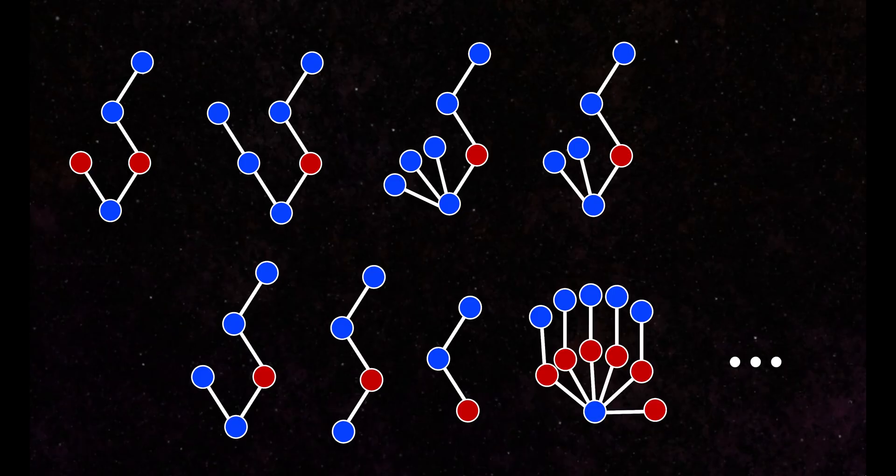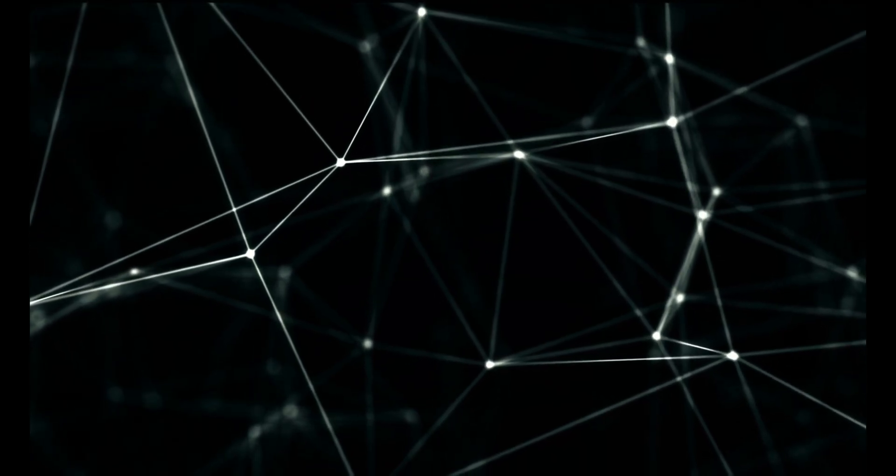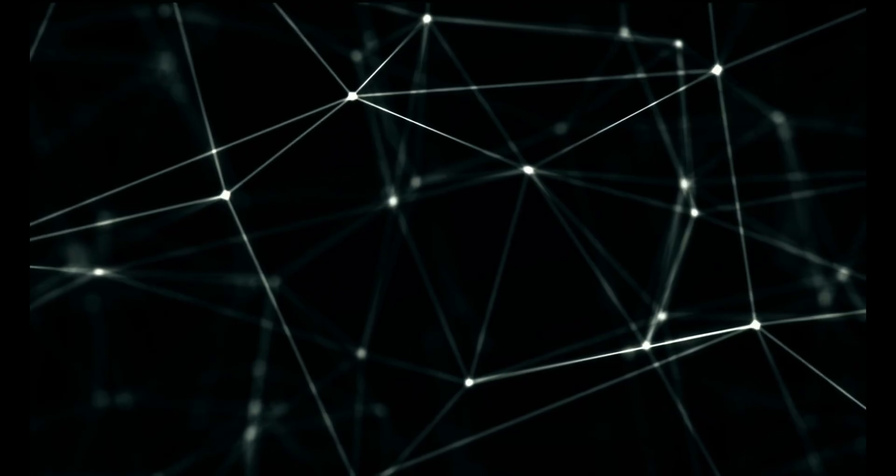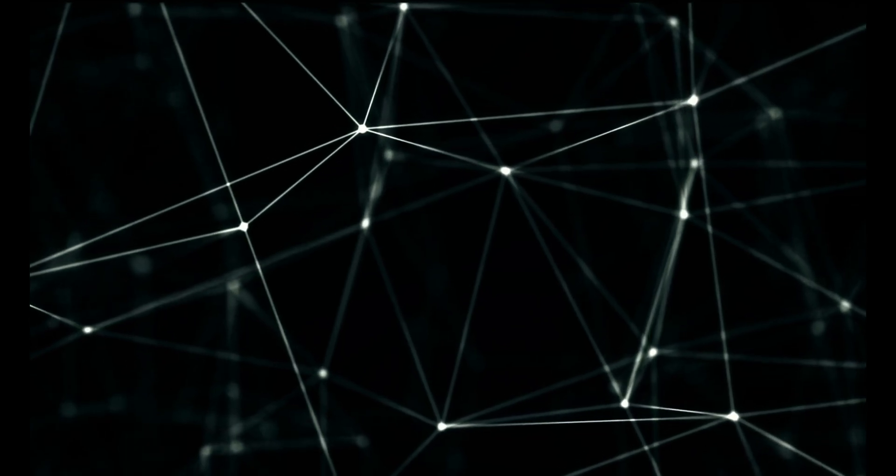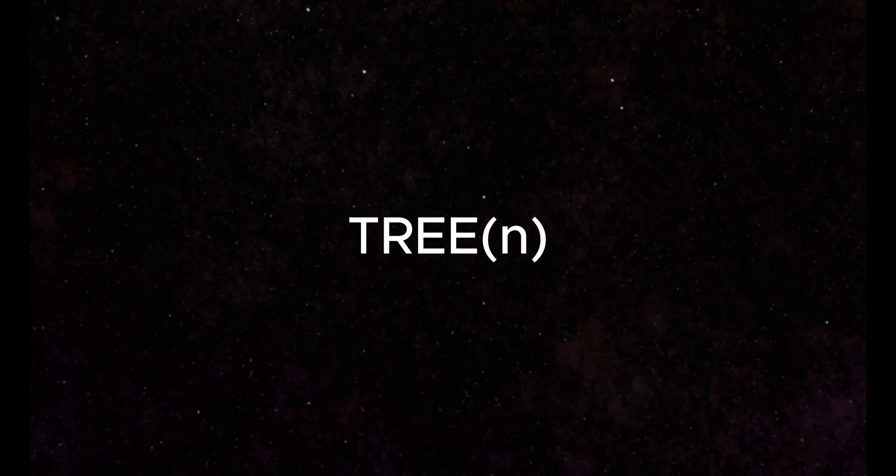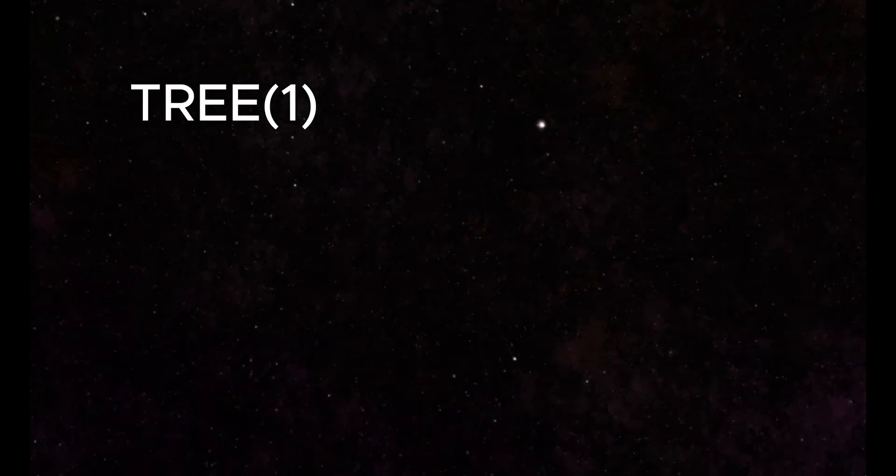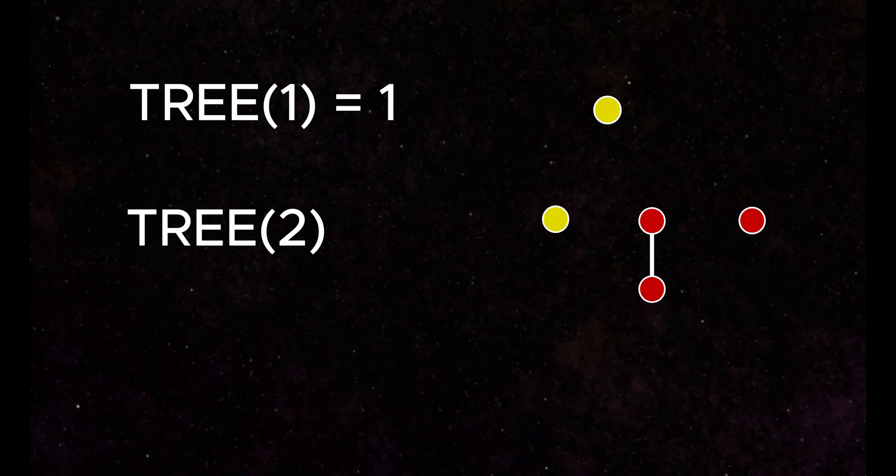This tree does not contain any previous tree, which means we can keep going. This also doesn't contain any previous trees, so we continue and increase the maximum number of nodes by one each time. We can actually build several more trees, none of which contain trees that came before. The extra color gives us a great deal of freedom to keep making trees. So do we ever stop? Yes. In fact, no matter how many colors we start with, there are only a finite number of trees we can ever draw in the sequence.